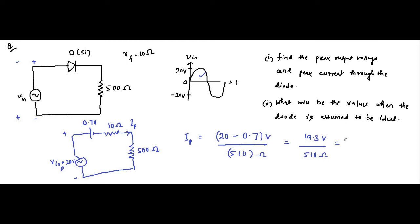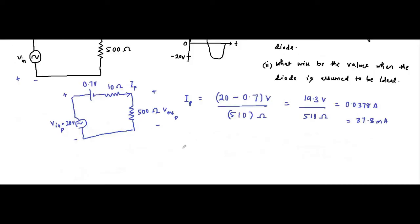That gives a peak current of 0.0378 ampere, or 37.8 milliampere. The peak output voltage across the load is 0.0378 × 500 ohm, which comes to approximately 18.921 volt. This completes the first part of the question.